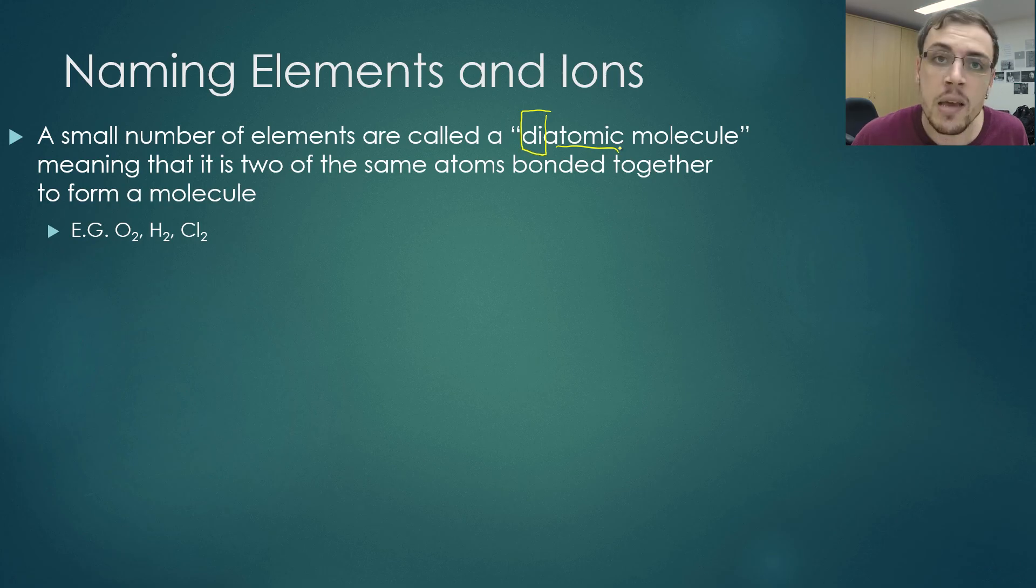All it means is that you've got the same atom that's bound to itself. Some examples here are O2, H2, Cl2. Why they bind to themselves like this will become much more apparent when we study Lewis structures and when we look at the actual shape of these atoms.